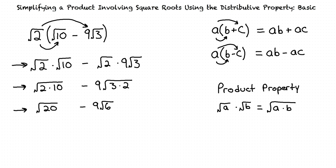Which term in the expression do you think can be simplified? To simplify, we look at the numbers we are taking the square root of — these numbers are called the radicand — and determine which ones can have a perfect square as a factor. A perfect square is the square of an integer. 1 is a perfect square because it is 1 squared. 4 is a perfect square because it is 2 squared. 9 is a perfect square because it is 3 squared. Those are just a few examples of perfect squares.